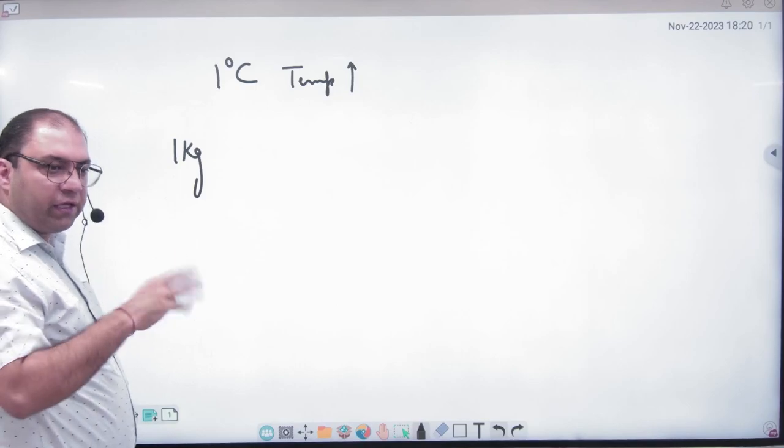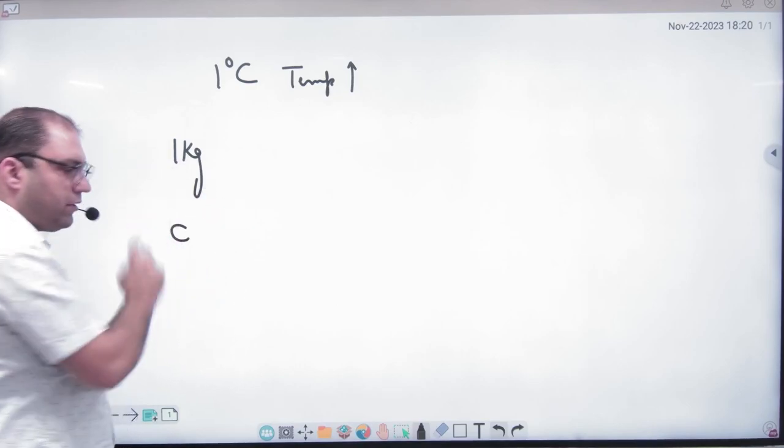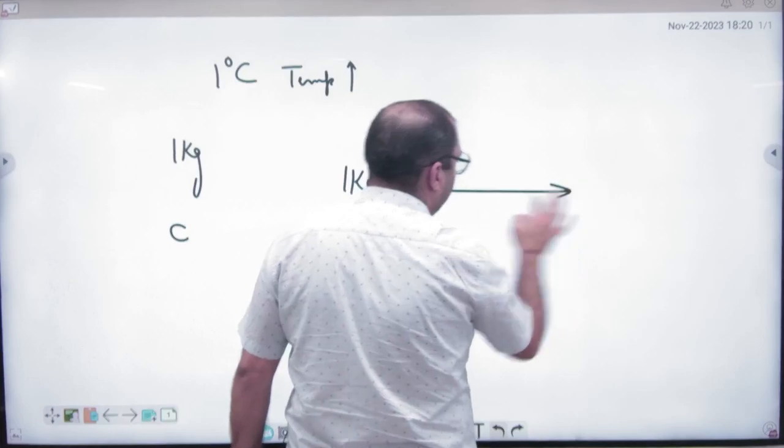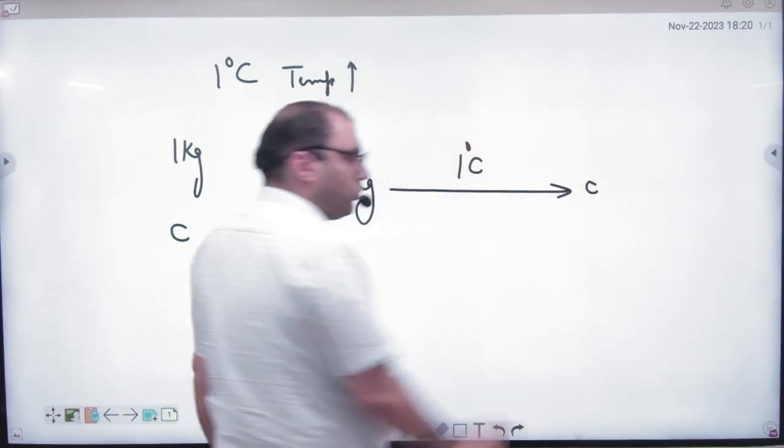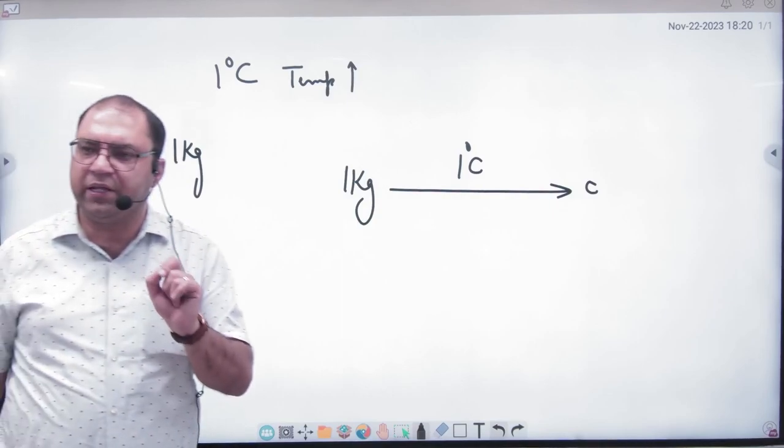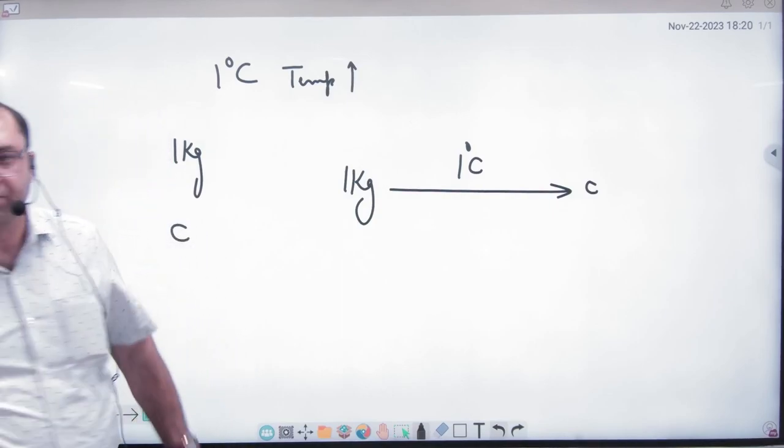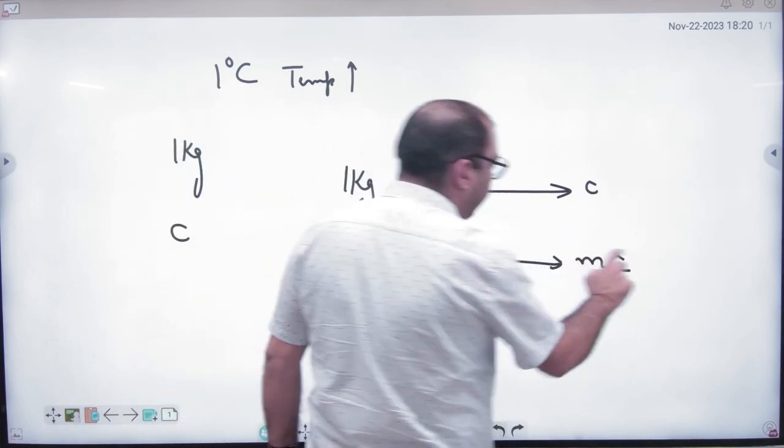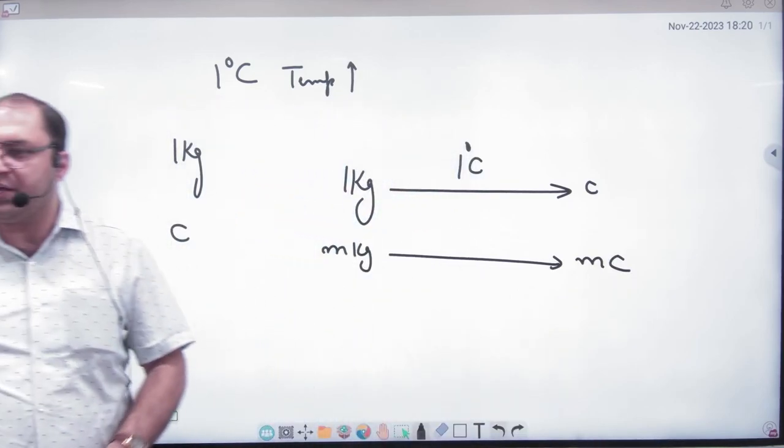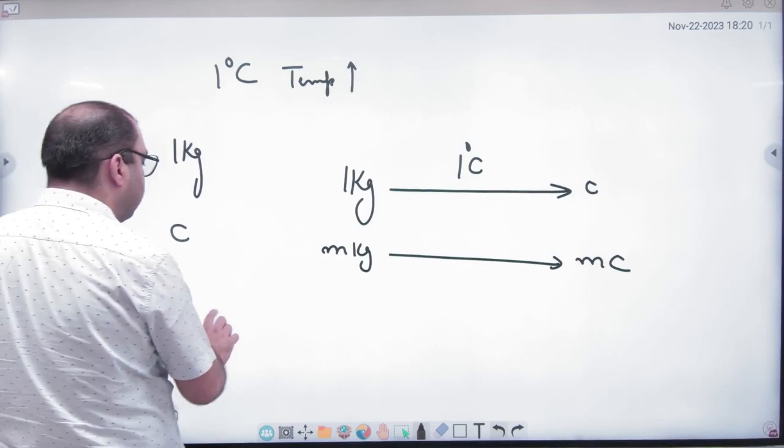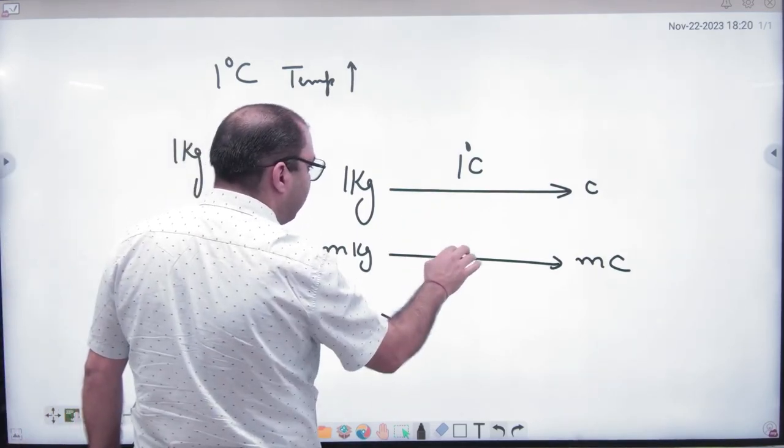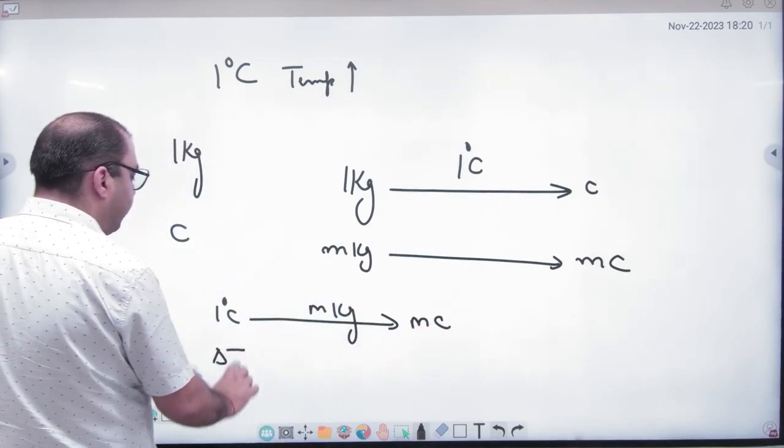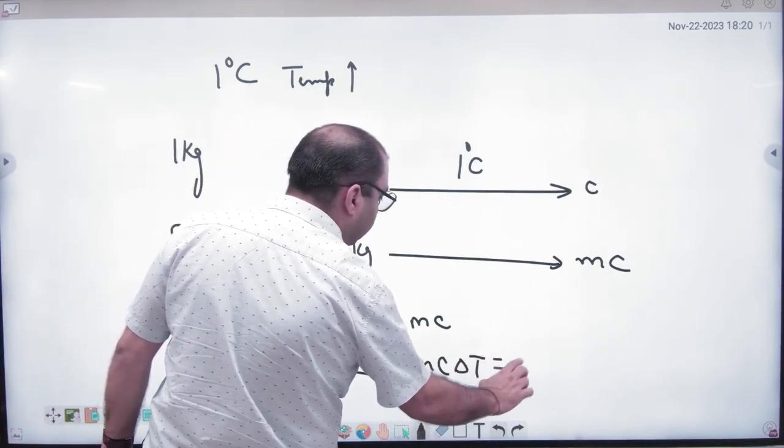So how much heat did I give? It's specific heat C. So if 1 kg substance and I raise it 1 degree celsius, I have to give C amount of heat. So if M kg substance, how much heat for 1 degree celsius? M into C. But if my rise in temperature is delta T, then how much heat? M C delta T.